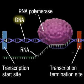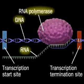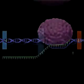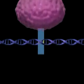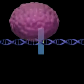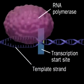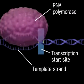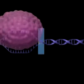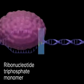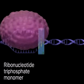Transcription is DNA-directed RNA synthesis, catalyzed by the enzyme RNA polymerase. The DNA double helix must unwind to expose the template strand so RNA polymerase can add the ribonucleoside triphosphate monomers to the growing RNA transcript.